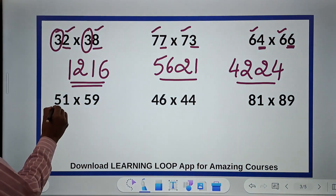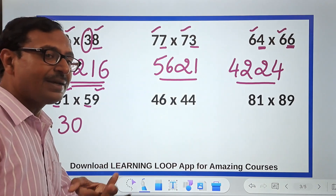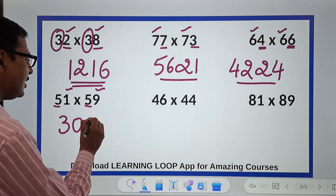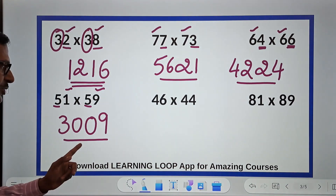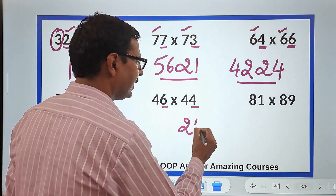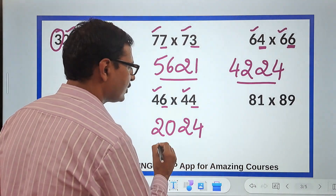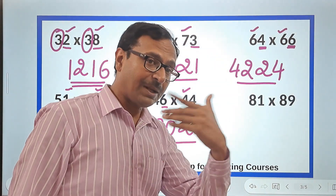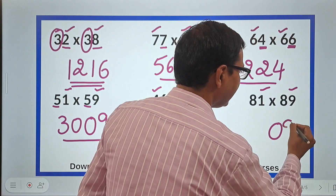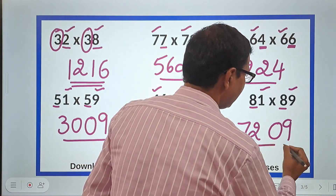Next: 51 and 59. Here 5 times 6 is 30, and 1 times 9 is 9. Important: if you get a single-digit result, prefix it with 0. So write 09, giving the answer 3009. Check it with a calculator. For 46 and 44: 6 times 4 is 24, and 4 times 5 is 20, so the answer is 2024. For 81 and 89: 1 times 9 is 9, again prefix as 09, and 8 times 9 is 72, so the answer is 7209.